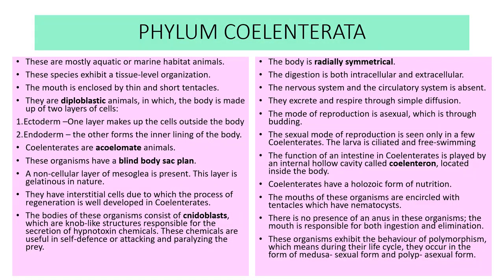Coelentrata in a nutshell — they are aquatic marine animals. They show tissue level of organization. The mouth is present, encircled by thin short tentacles. They are diploblastic, having two layers: ectoderm and endoderm. They are acoelomate animals. They show a blind body plan — the sac plan. There is a non-cellular layer of mesoglia between the two layers, and they have specialized cells known as cnidoblasts, which are the stinging cells.